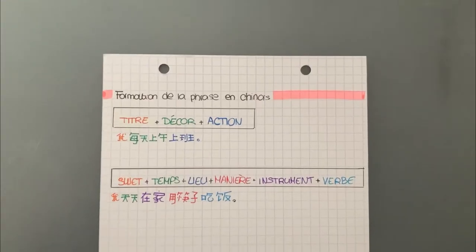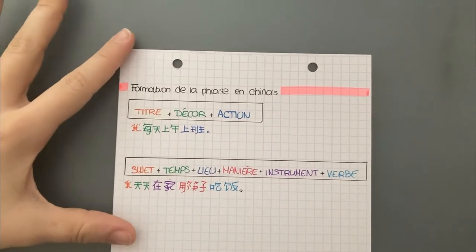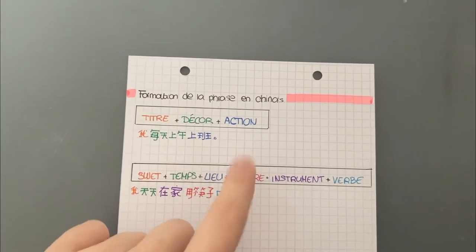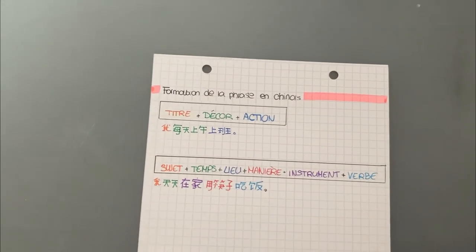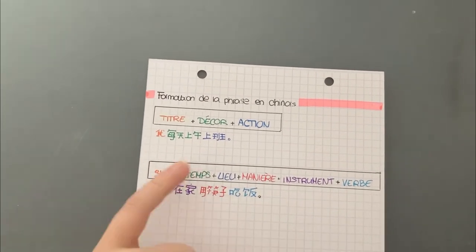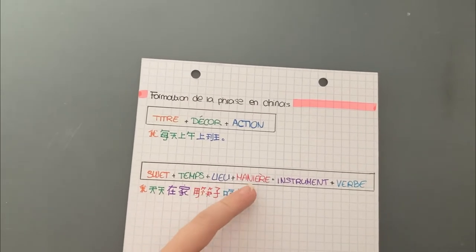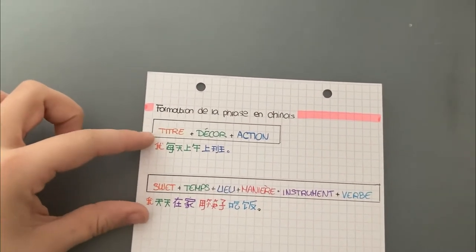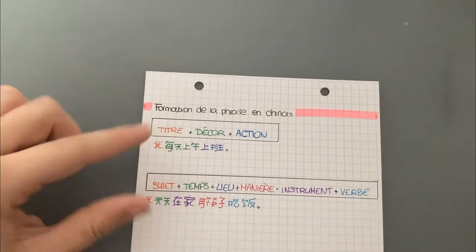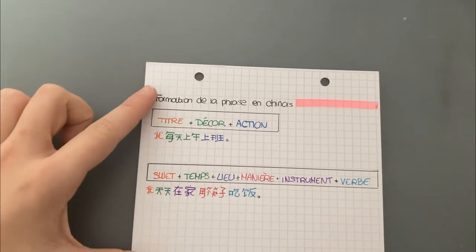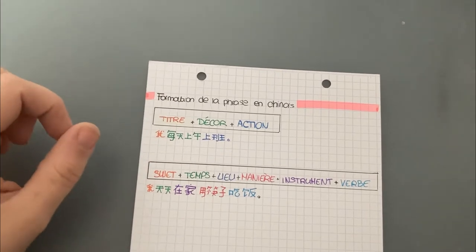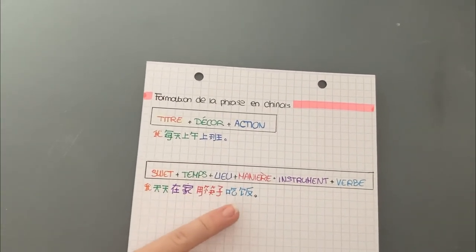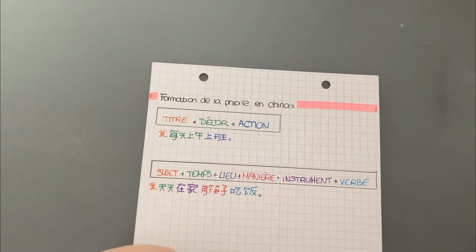On my paper I've written the two sentence formations I've learned. The first is the simplest: title, context, and action. Then there's the one with subject, time, place, the manner, what you used, and finally the verb. For each structure I've written an example sentence using the colors I used to label each component — just to have a concrete example of how it works.